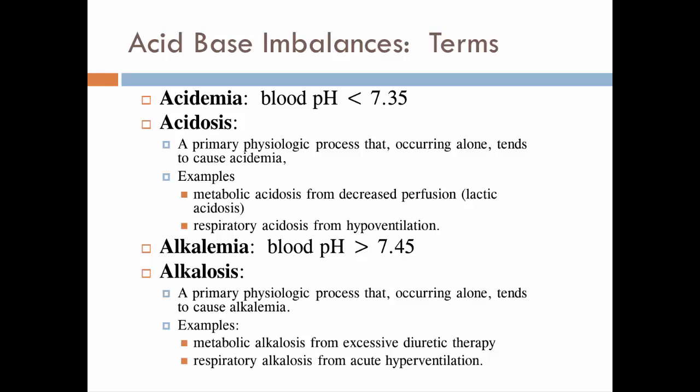There are two types of acidosis: metabolic acidosis, such as from decreased perfusion where you get lactic acid buildup or keto acids buildup. Those would be examples of metabolic acidosis. Respiratory acidosis can also happen. This would be from hypoventilating, lowering respiratory rates so that CO2 builds up.